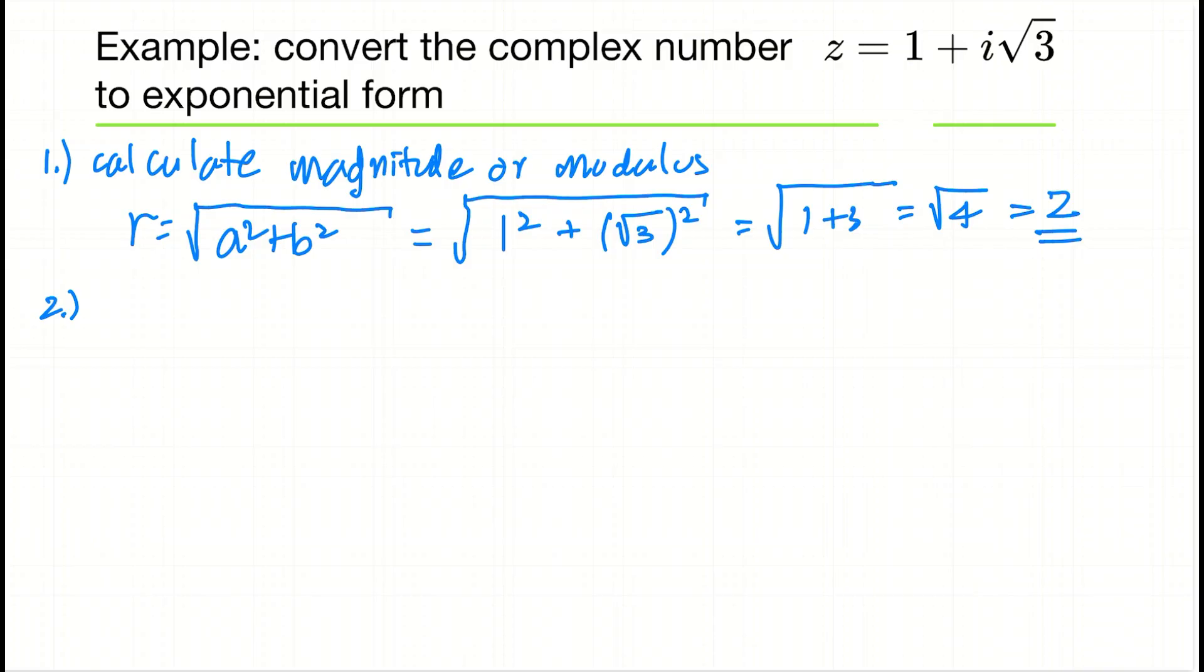Second step: we're going to find theta, the angle, because we've got an exponential function that has to have a magnitude and an angle. Remember from earlier videos—I'll put a link to it—the tangent of theta equals the imaginary part divided by the real part of z.